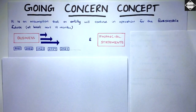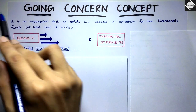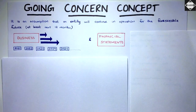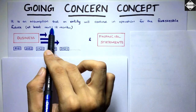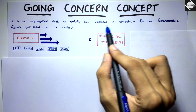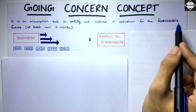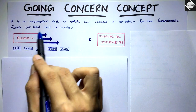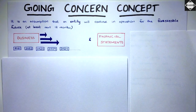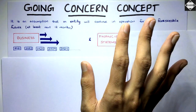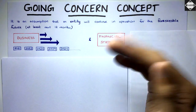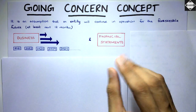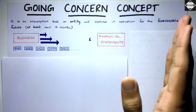Hi everyone, welcome back. Today in this video we are going to understand the going concern concept of accounting. It is an assumption that an entity or business will continue in operation for the foreseeable future — at least the next 12 months. It means we assume in accounting that the business will not shut down or be closed down; it will continue its operations, doing trading, purchase, sale, or providing services.